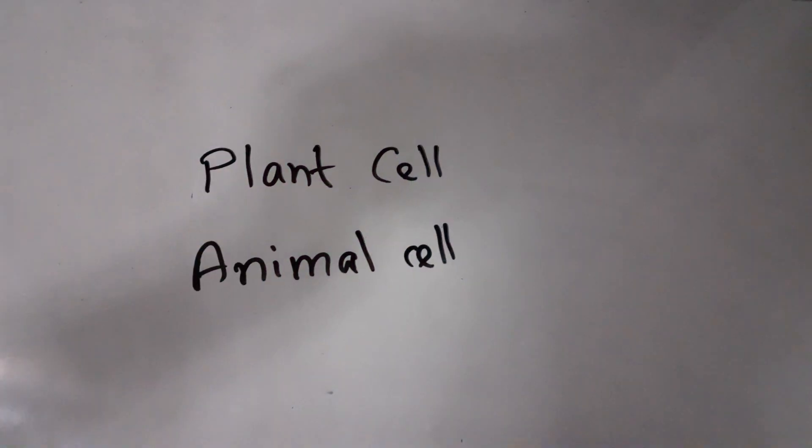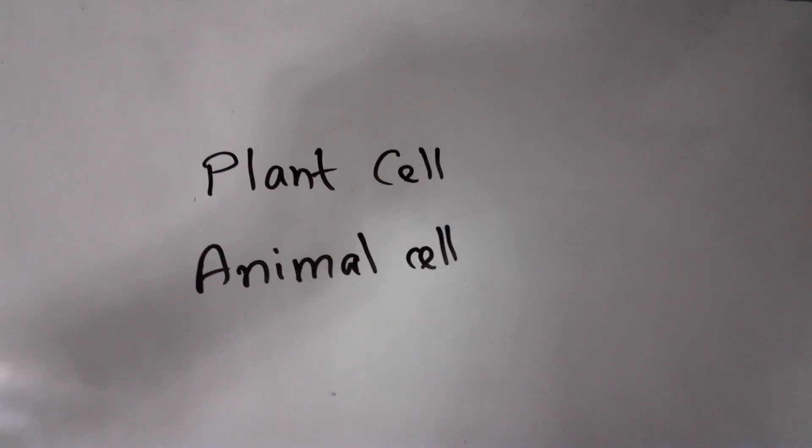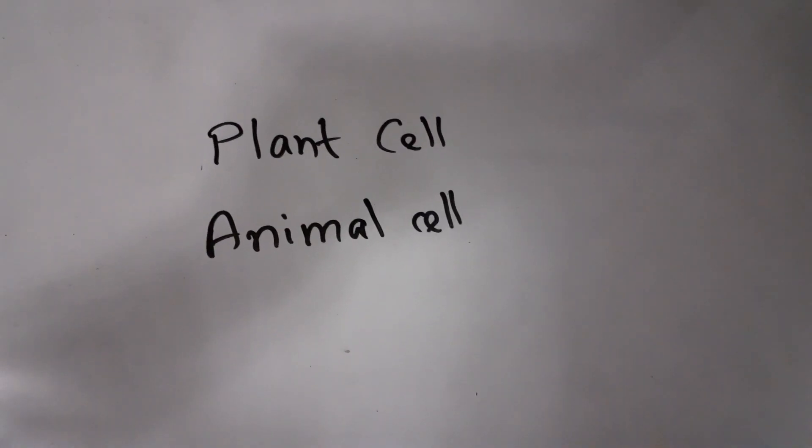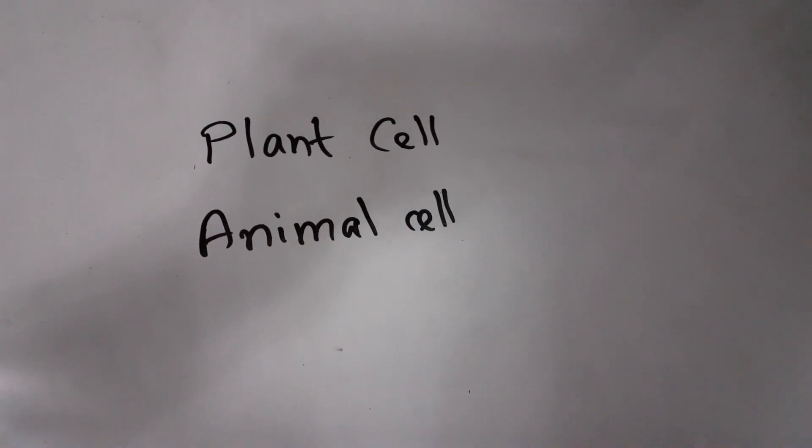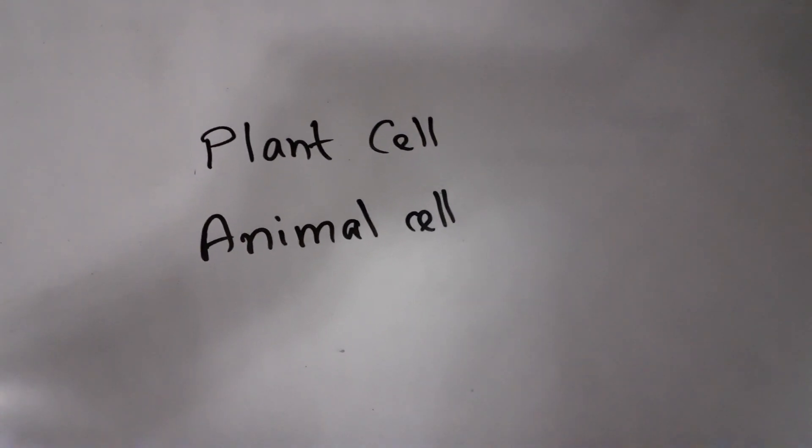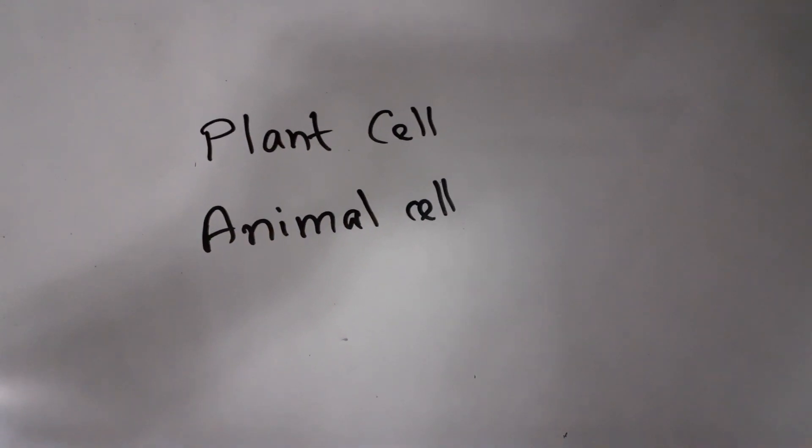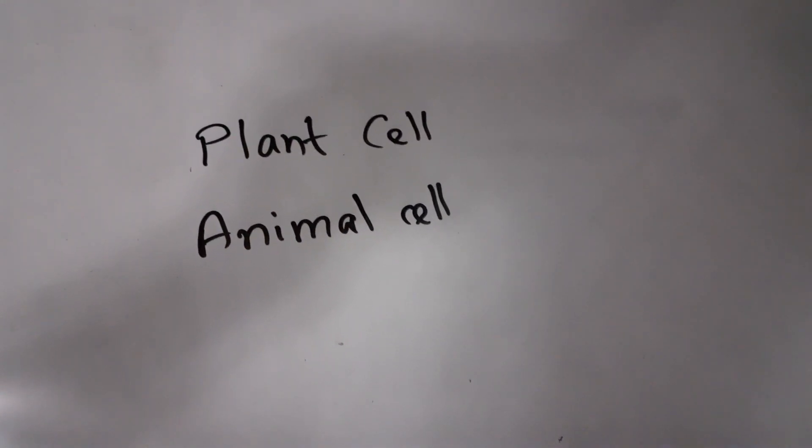Mainly there are two types of cells: plant cells and animal cells. If you consider the structure of these cells, the structure is different. To observe these structures, we use a microscope.